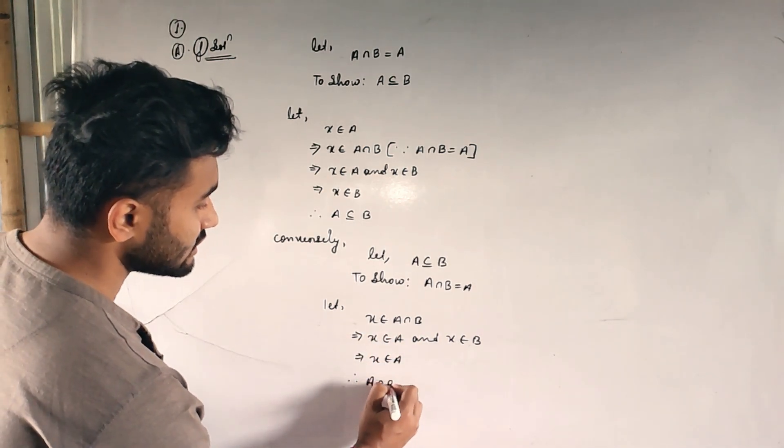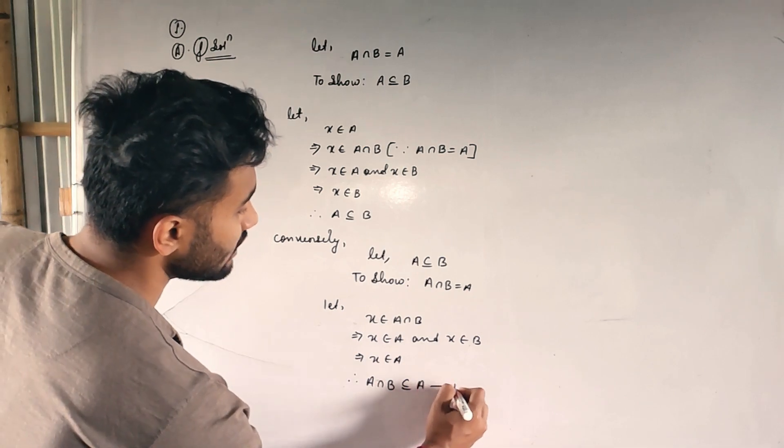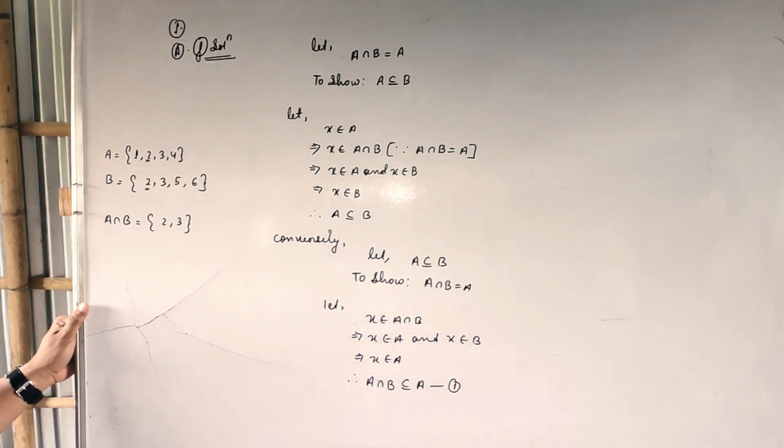This time I have written only A. Therefore A intersection B is a subset of A, equation 1, done.